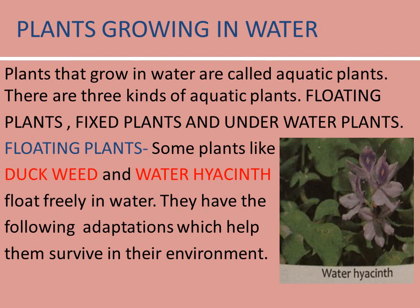Plants that grow in water are called aquatic plants. There are three kinds of aquatic plants: floating plants, fixed plants, and underwater plants. Some plants like duckweed and water hyacinth float freely in water. They have the following adaptations which help them survive in their environment.